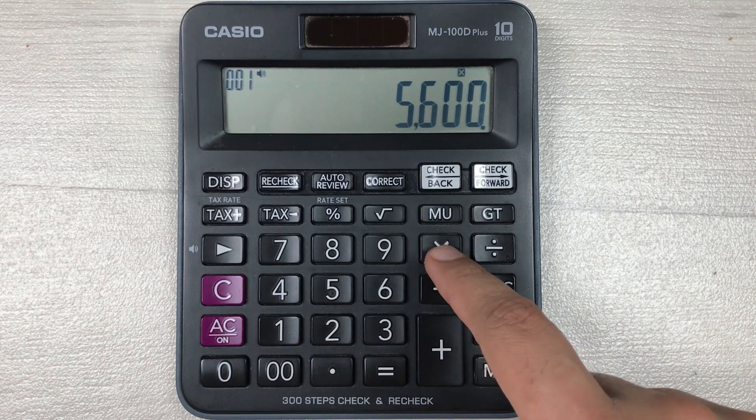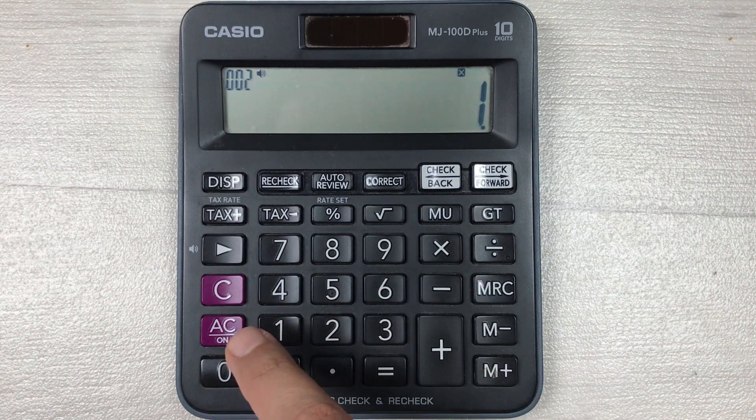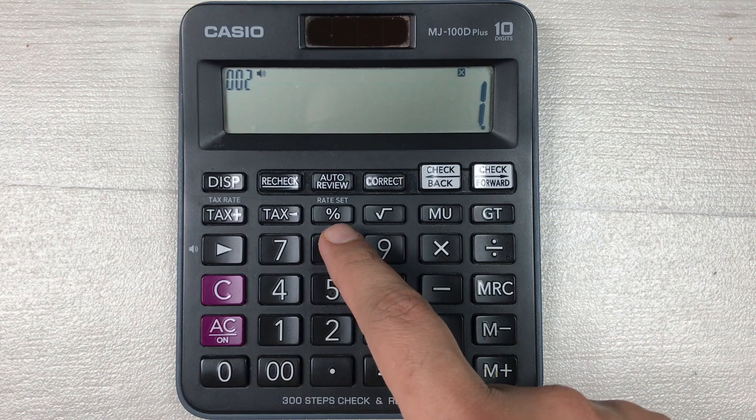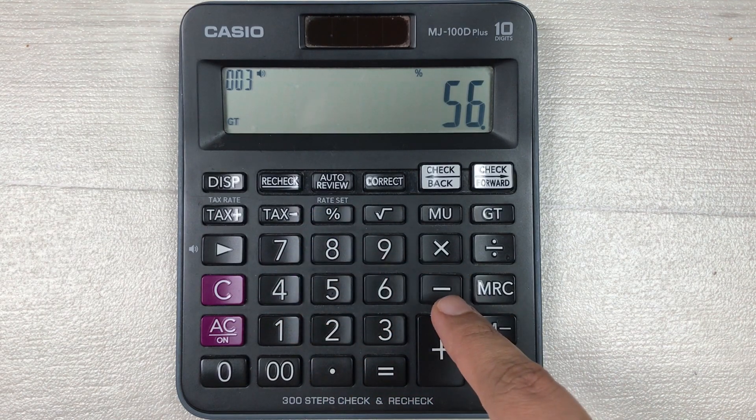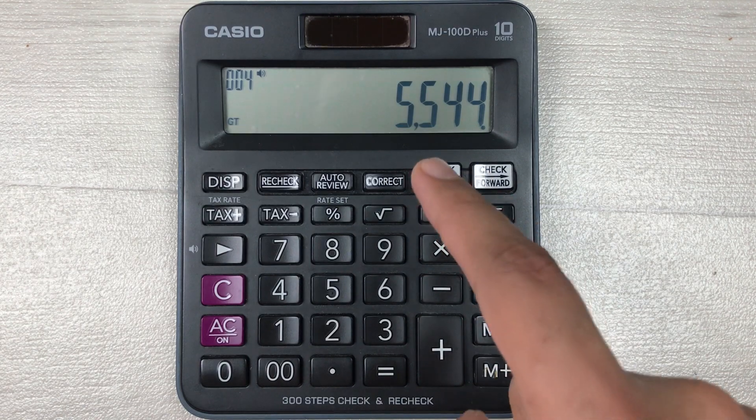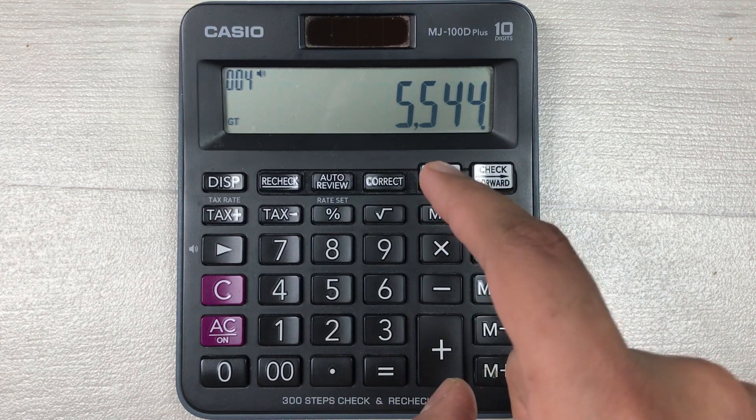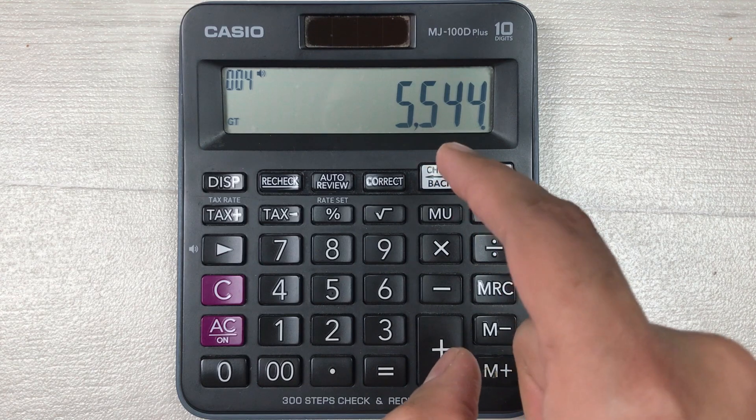You have to multiply it with 1, and then you have to press this percentage button, and then in the last you have to press this minus button. Here is your final answer: 5544 is the final price after 1% off.